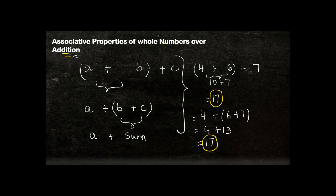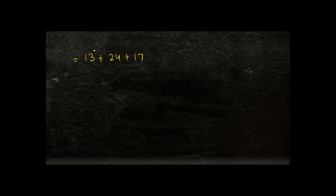This applies for all whole numbers, meaning whenever you are adding more than two whole numbers it doesn't matter which two you add first — the result will always be the same. This is very useful in practice. For example, if I tell you to add 13 plus 24 plus 17, you can consider whether rearranging the numbers makes the calculation easier.